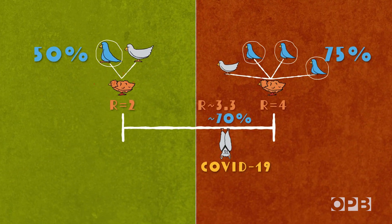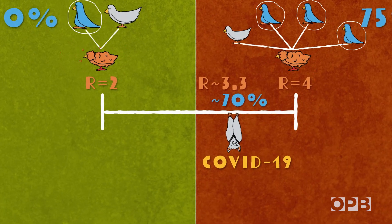For COVID-19, estimates are we'll need at least 70% immunity to get us back to normal.